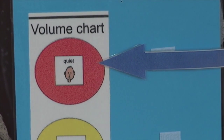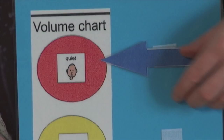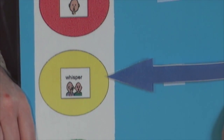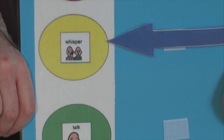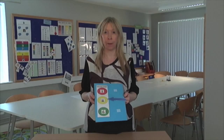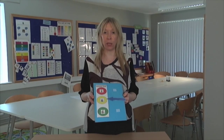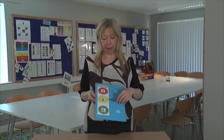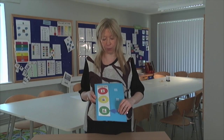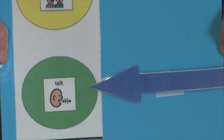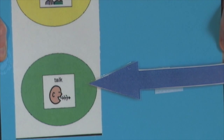Whenever the child who is sensitive to noise begins to calm down and regulate, the teacher can move the arrow to amber to indicate to the class that they can whisper. When the child is fully calm and regulated again, the arrow can be moved to green to indicate to the class that they can again talk freely.